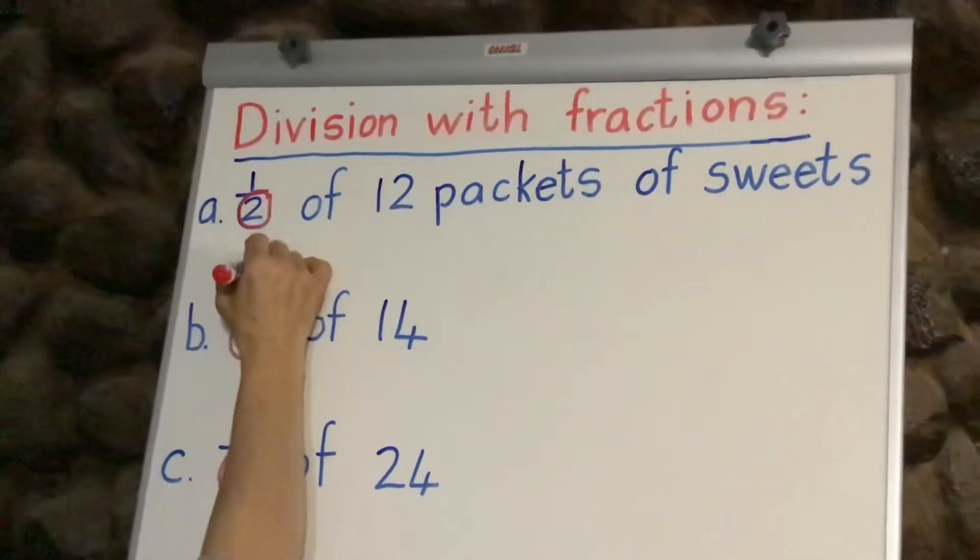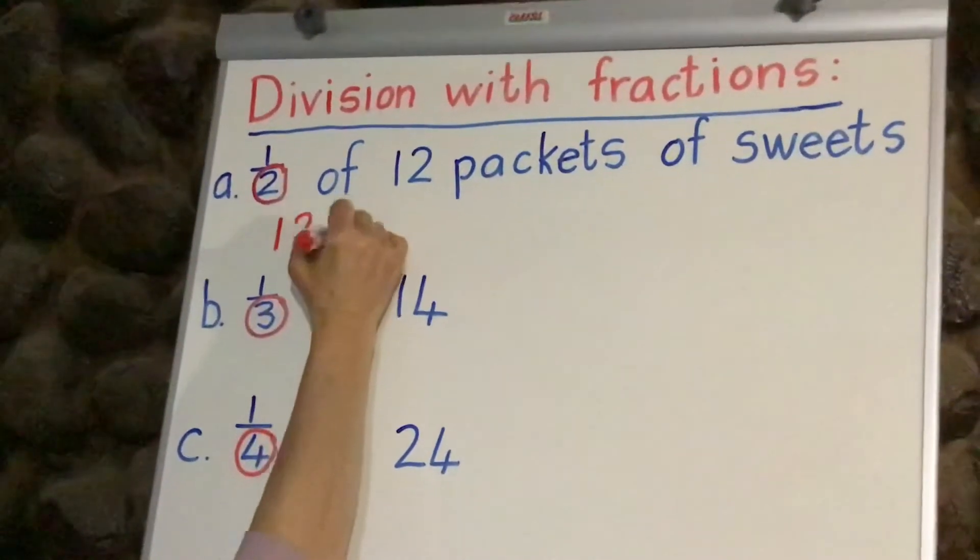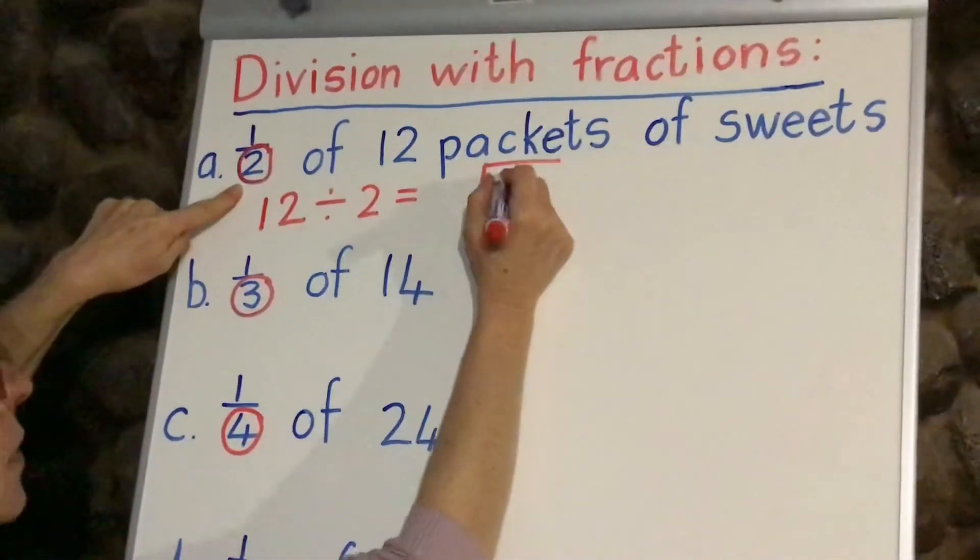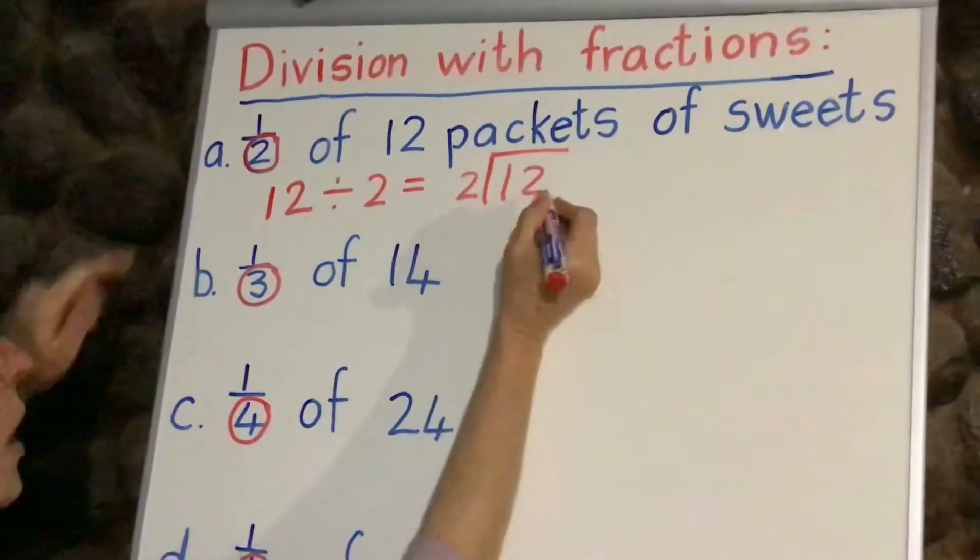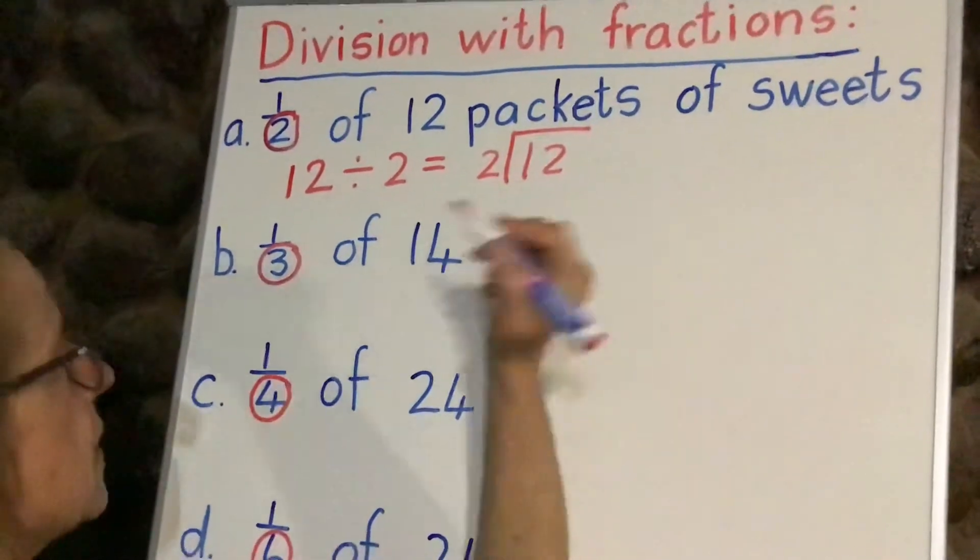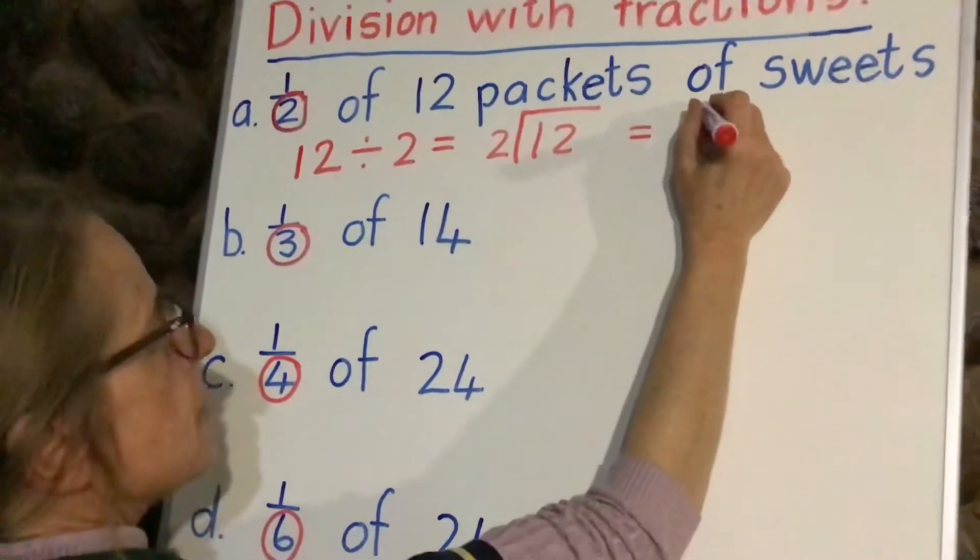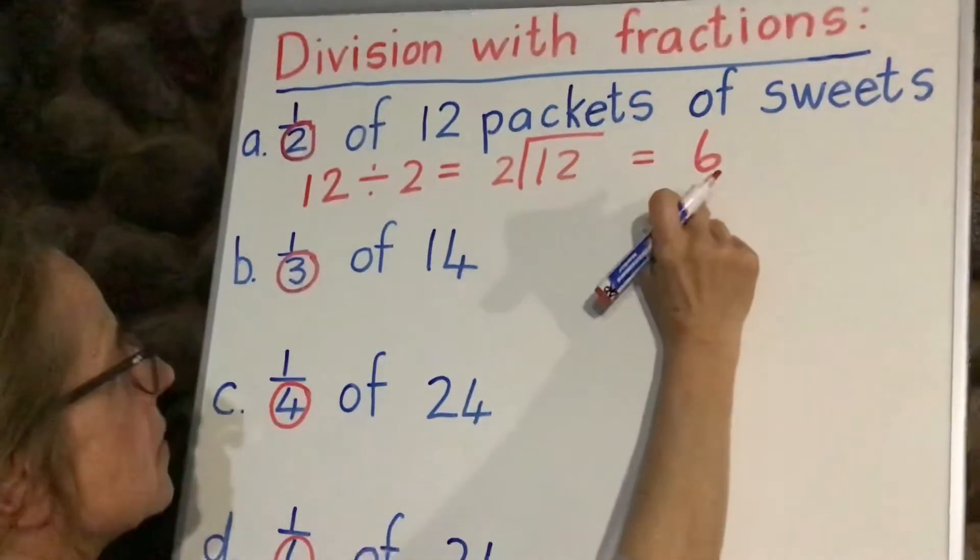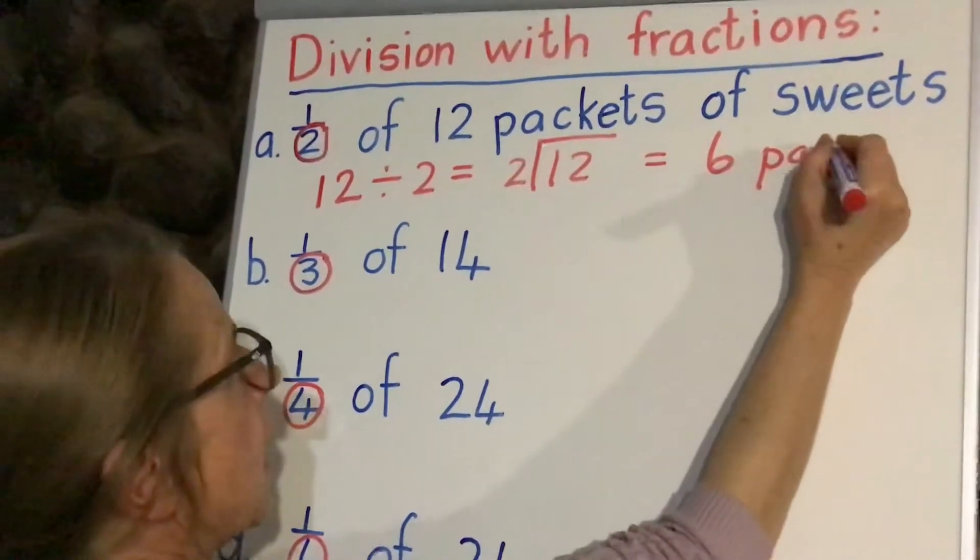We've done many of those, so what we do is we divide by our denominator. We know that 2 goes into 12, it goes 6 times, and because of our tables we know that they each get 6 packets of sweets.